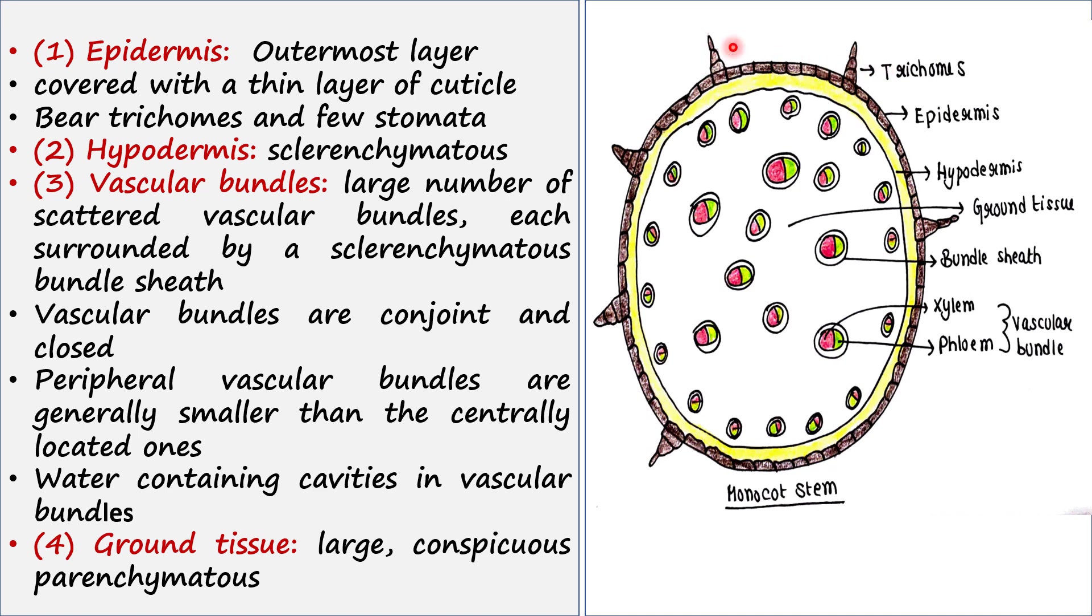These trichomes are some hair-like structures. Next is hypodermis. This yellow color layer is hypodermis, present just below the epidermis. This hypodermis layer contains sclerenchyma cells.